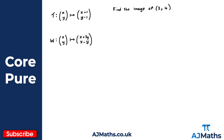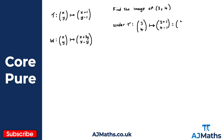So now we apply the transformation. Under T, we take the point three, four and it maps to x plus one and y minus one. So that would be three plus one and four minus one. In other words, we're just substituting in x and y. So under T, we take the point three, four and this maps to four and three.